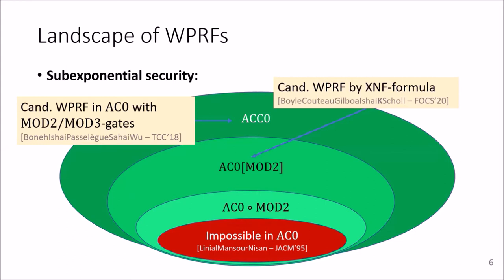And what we show in this work is that you can go even lower to sparse F2 polynomials, so similar to XNF formula, but without negation in the inputs.